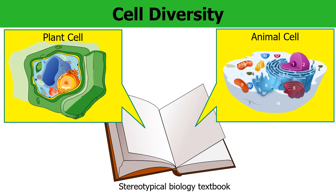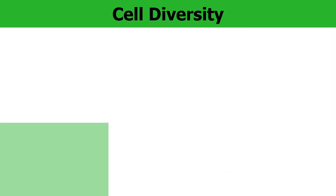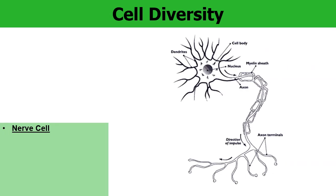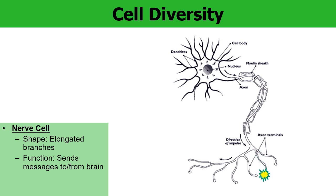For example, here's a picture of a nerve cell, also called a neuron. You can see the shape with the elongated branches — it almost looks like a tree with branches and roots coming off in a variety of directions. This is because the shape helps it perform its function, which is to send electrical messages and electrical signals to and from the brain.